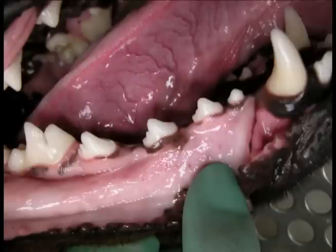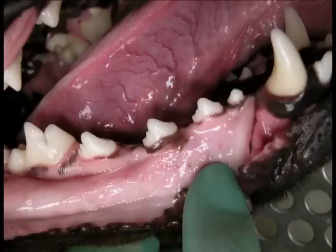This is a picture of normal periodontal tissues on the lower jaw of a dog. There is no calculus on the teeth. The gingiva is coral pink in color with no redness or inflammation.